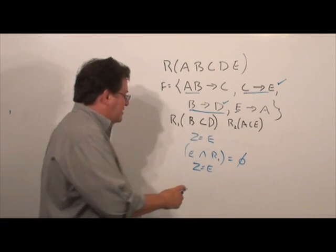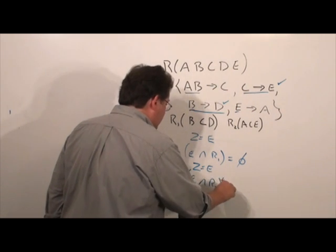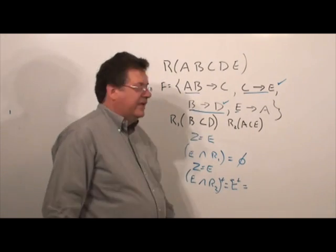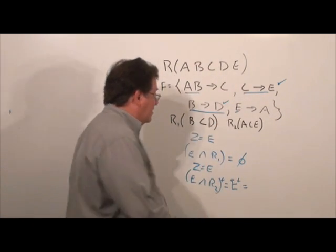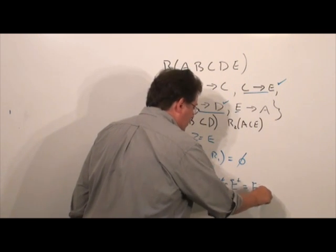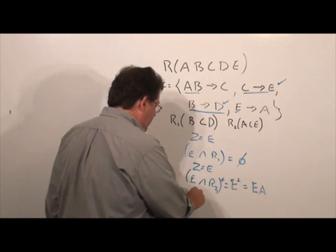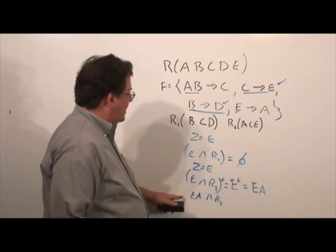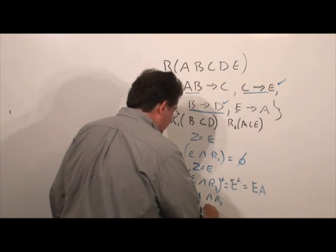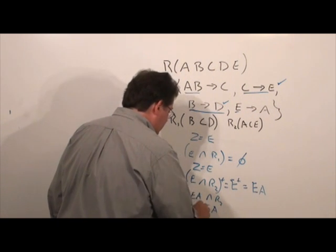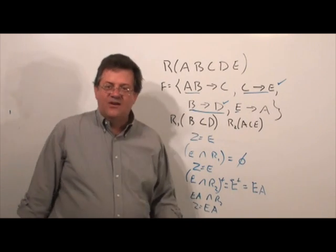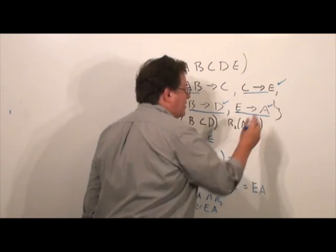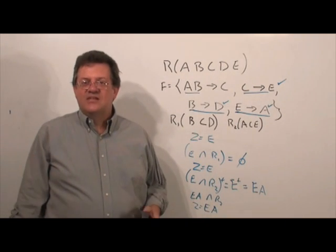Now, we do Z intersect R2 and that closure, which gives us E closure. And what is E closure? EA. Now, we do EA intersect R2. EA intersect ACE gives us EA. So, Z will now equal Z plus the EA or Z equals EA. Since it contains the A, therefore, that functional dependency will be preserved.